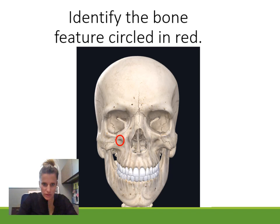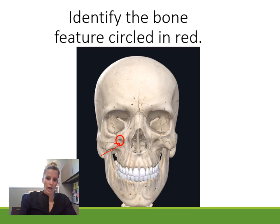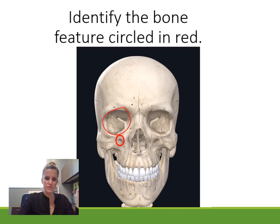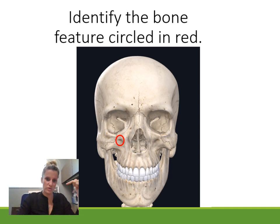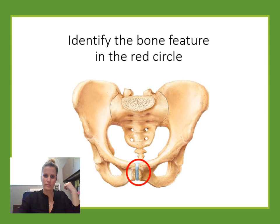Identify the bone feature. This is circling a little hole on the face. There are multiple sets of holes in the face for cranial nerves to pass through the skull bones toward the surface. There are holes above the eye — the supraorbital foramen — and holes below the eye. 'Orbit' refers to the eye socket, 'supra' is above. This is circling the hole below the orbit, which is the infraorbital foramen — 'infra' because it's below the orbit.